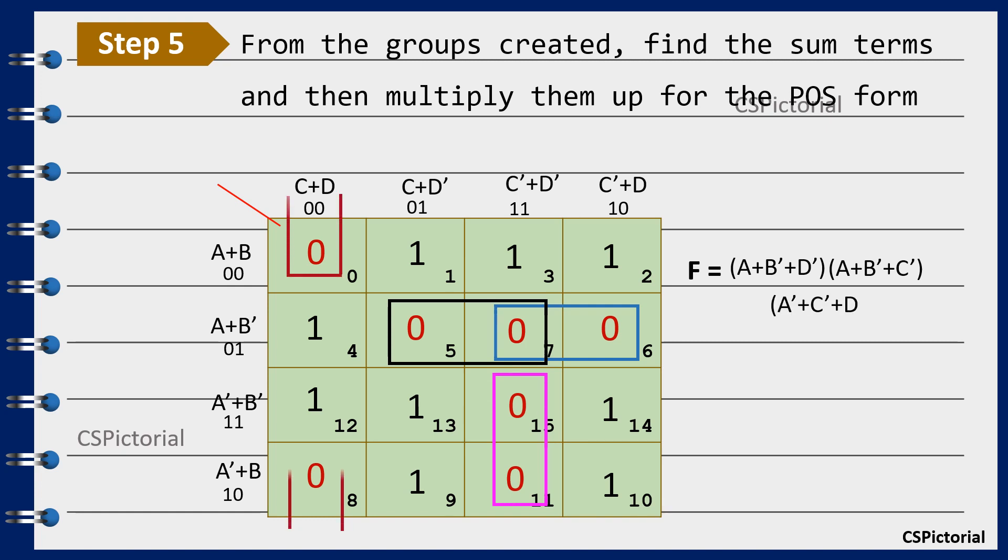The same procedure is done when a group wraps around the table. This group points to the terms a plus b, a bar plus b and c plus d. Here a and a bar get cancelled and the term b plus c plus d gets into the final simplified expression.